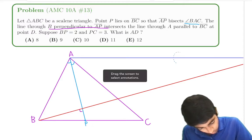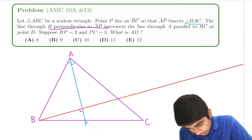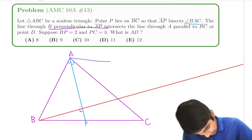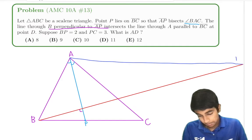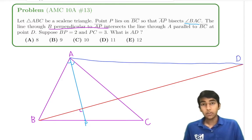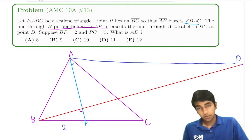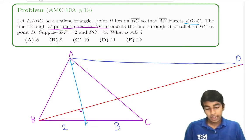And we know that these two lines will intersect at this point right here, at the point D. Suppose BP equals 2 and PC equals 3. What is AD?